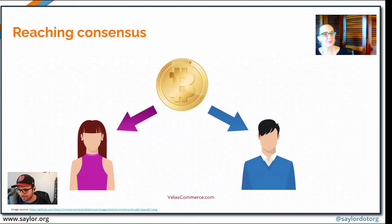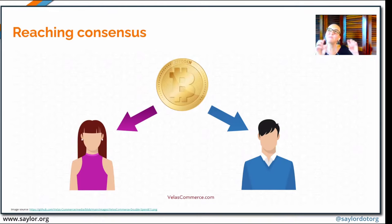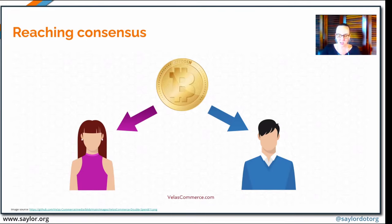We have a question: is there a limit to how many outputs you can create from one Bitcoin? Yes, there is. I want to say around 483, but it gets a little specific. There are limits to how big a transaction can be overall and the amount of outputs you can have on it. It's pretty flexible, but there are definitely some limits on that.